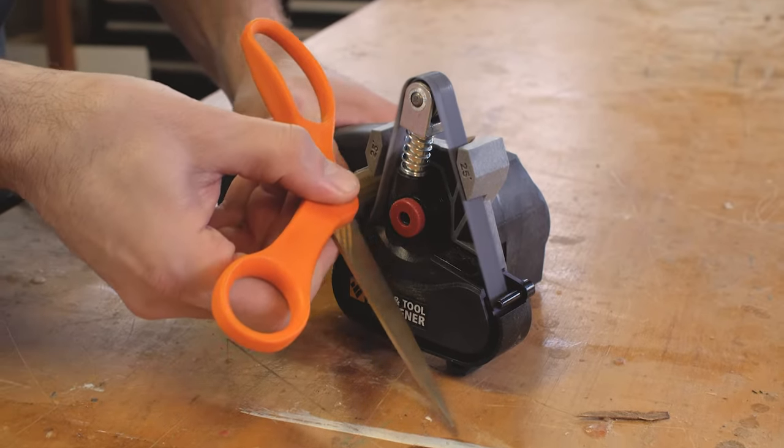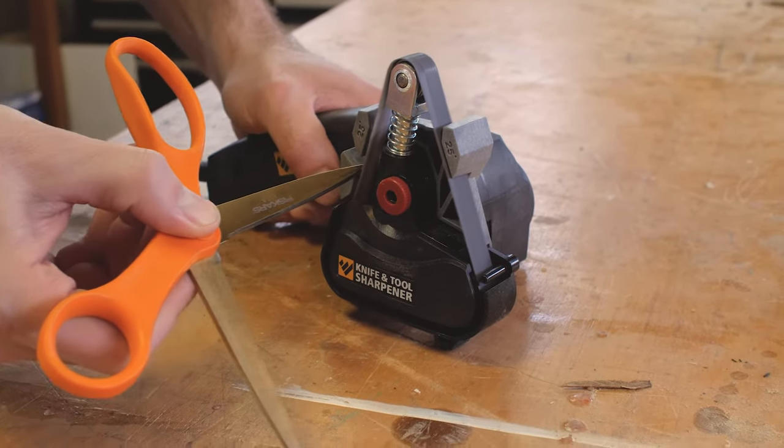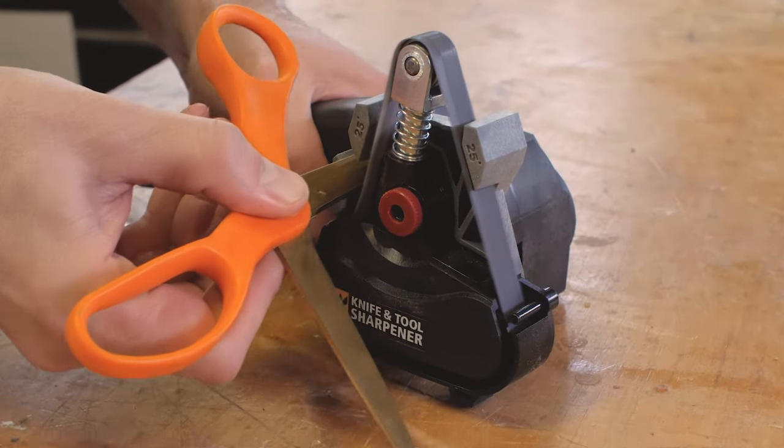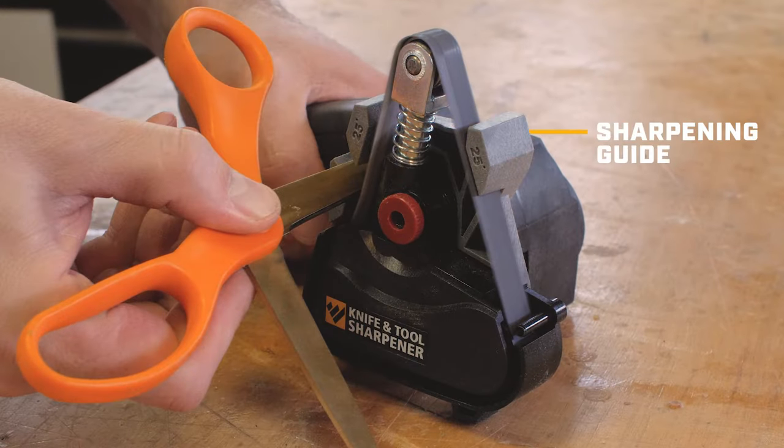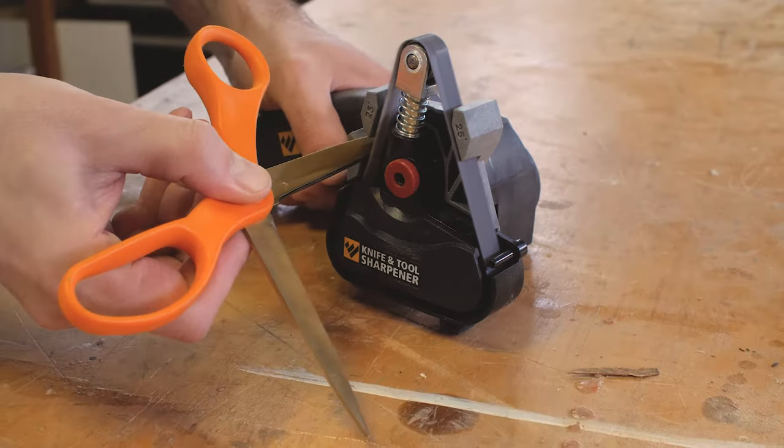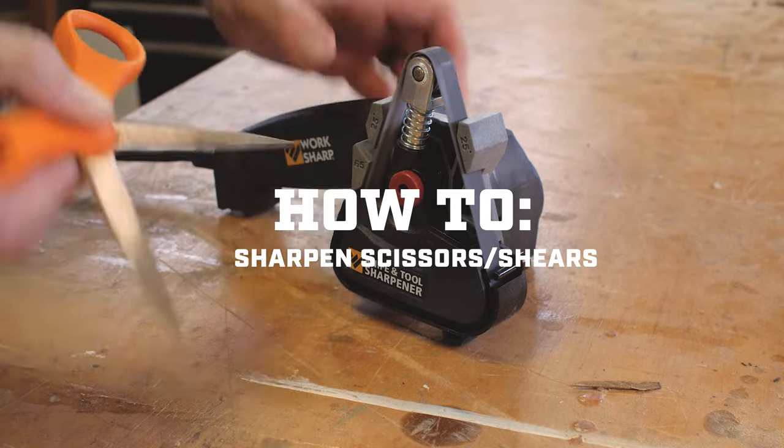The original Work Sharp knife sharpener sharpens every knife you own and a wide range of common lawn and garden tools, even scissors. The sharpening guide holds the scissor blade at the proper angle when sharpening. The flexible abrasive belt quickly sharpens the cutting edges and conforms to any blade shape for sharpening scissors.